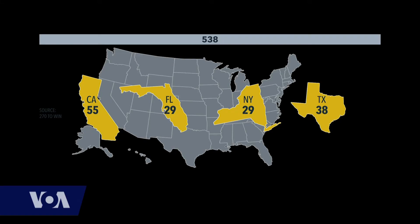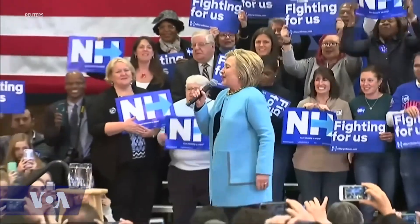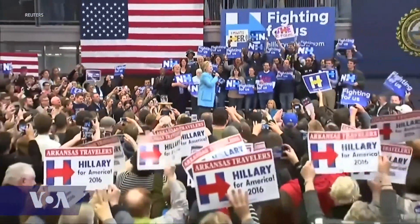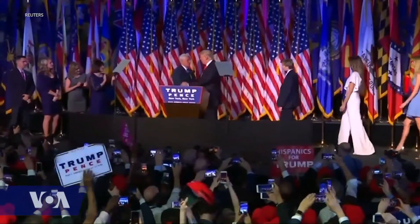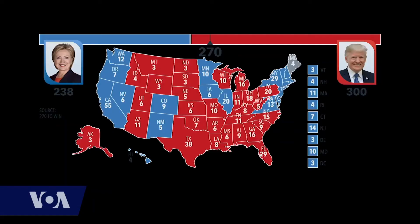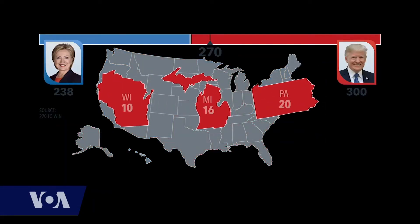The objective? Win enough states to reach 270 electoral votes, a simple majority of the 538 electoral votes available. In 2016, Democrat Hillary Clinton won the popular vote by about 3 million votes, but Republican Donald Trump won the Electoral College by more than 70 electoral votes, flipping six states that voted Democrat in 2012, winning Wisconsin, Michigan, and Pennsylvania by fewer than 80,000 votes.